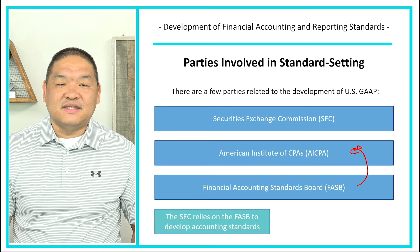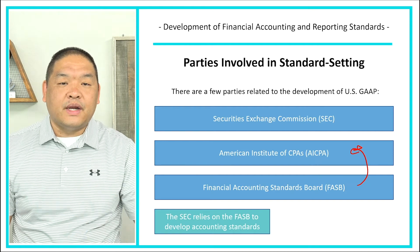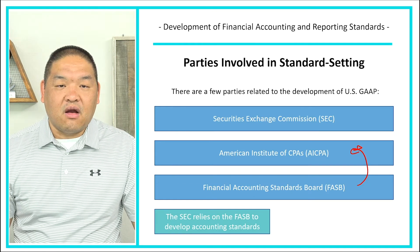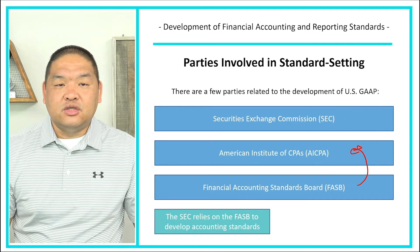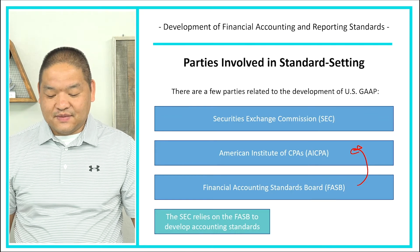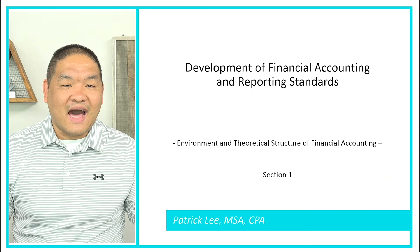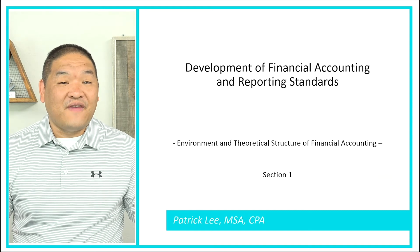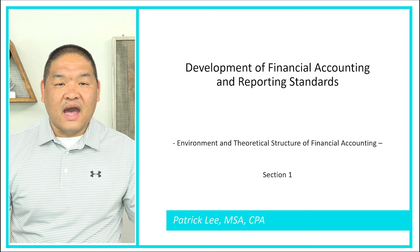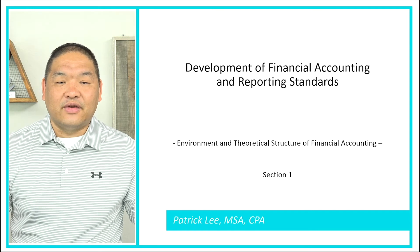The SEC relies on FASB to develop accounting standards because they're in the business of enforcement, not standard-setting. FASB also works in tandem with the AICPA, so the AICPA isn't the only one setting standards for private companies. The key party here is FASB — the Financial Accounting Standards Board — responsible for GAAP. The SEC handles regulatory oversight, and the AICPA ensures private companies follow a set standard of rules.